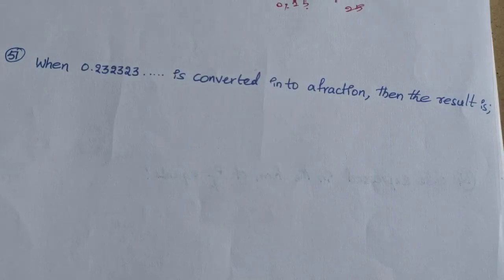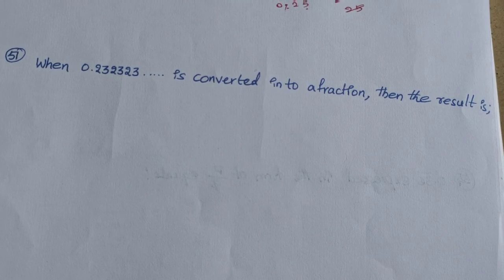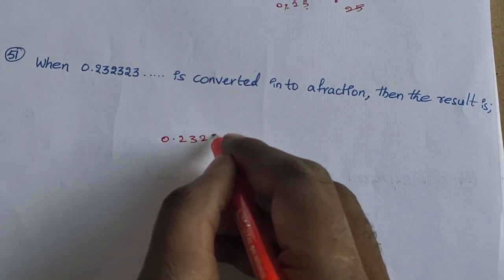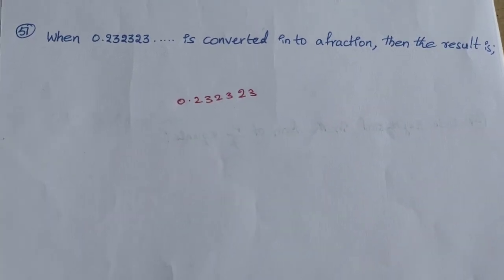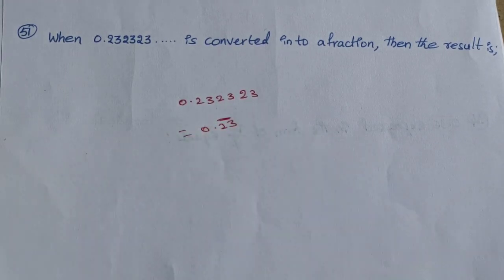When 0.232323... data is converted into a fraction, the result is — we write 0.23232323. Now 0.232323... is a repeating decimal. We call it 0.23 bar, where the bar indicates the repeat value.